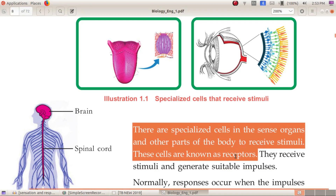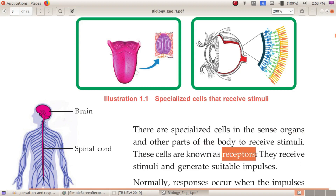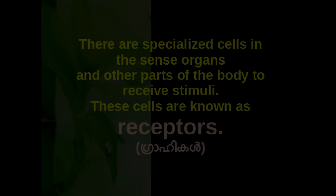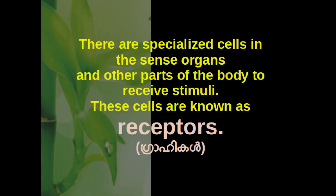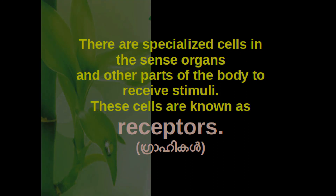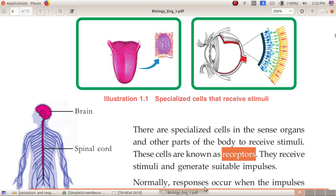Specialized cells in the organs and other parts of the body detect stimuli. These cells are known as receptors. What are the receptors?